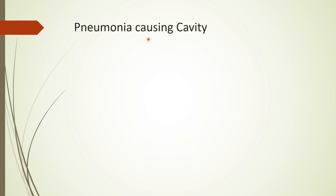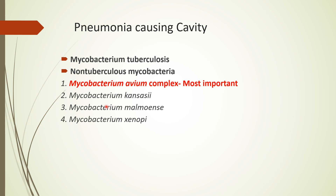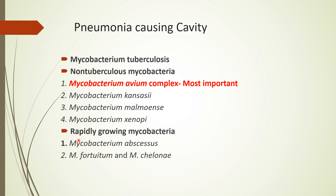What are the pneumonia conditions causing cavity? Under tubercular conditions: Mycobacterium tuberculosis, and non-tuberculous mycobacteria — the most important being Mycobacterium avium complex, along with other organisms such as M. kansasii, M. malmoense, and M. xenopi. Under rapidly growing mycobacteria: Mycobacterium abscessus, M. fortuitum, and M. chelonae.